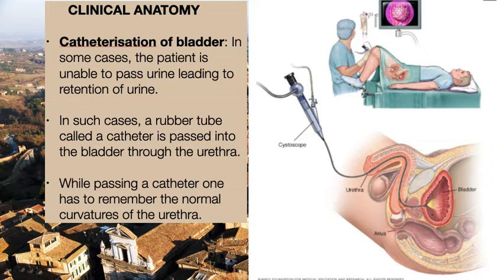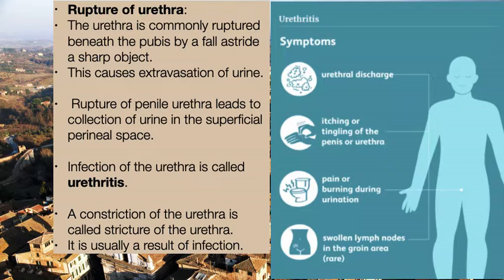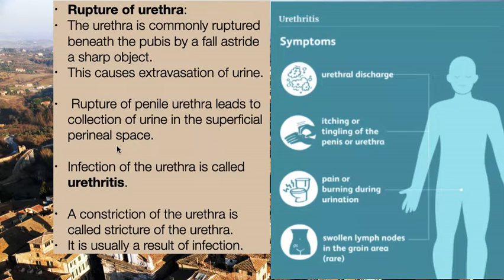Regarding clinical anatomy: catheterization of the bladder is performed in patients unable to pass urine, leading to retention. A rubber tube is inserted and passed through the urethra into the bladder; while doing so, one must remember the normal curvatures of the urethra. Rupture of the urethra is commonly seen in fractures of the pelvis, causing extravasation of urine. Rupture of the penile urethra leads to collection of urine in the superficial perineal space.